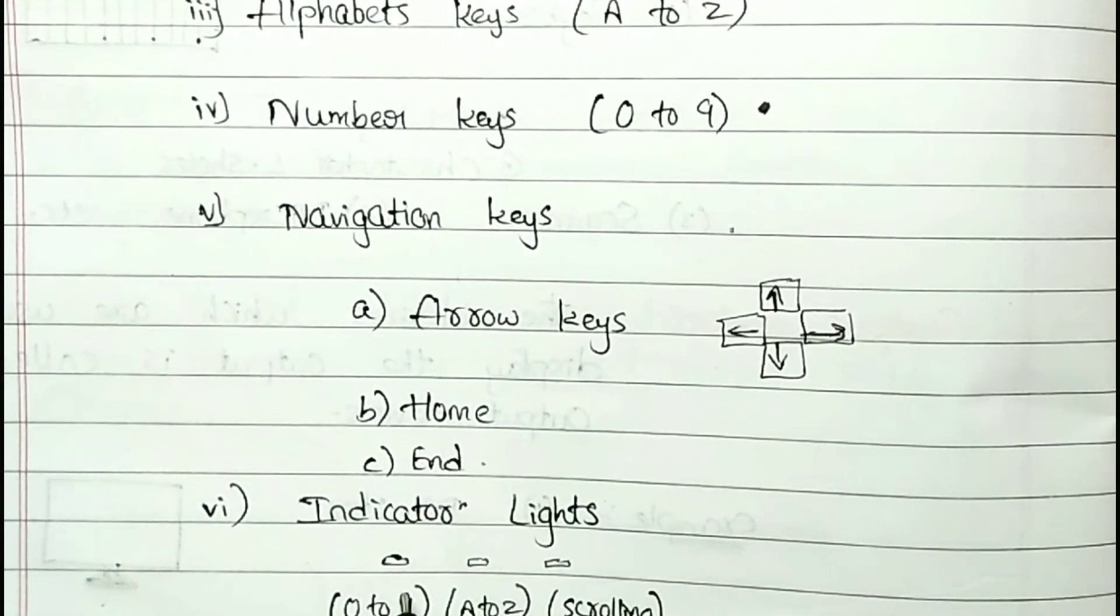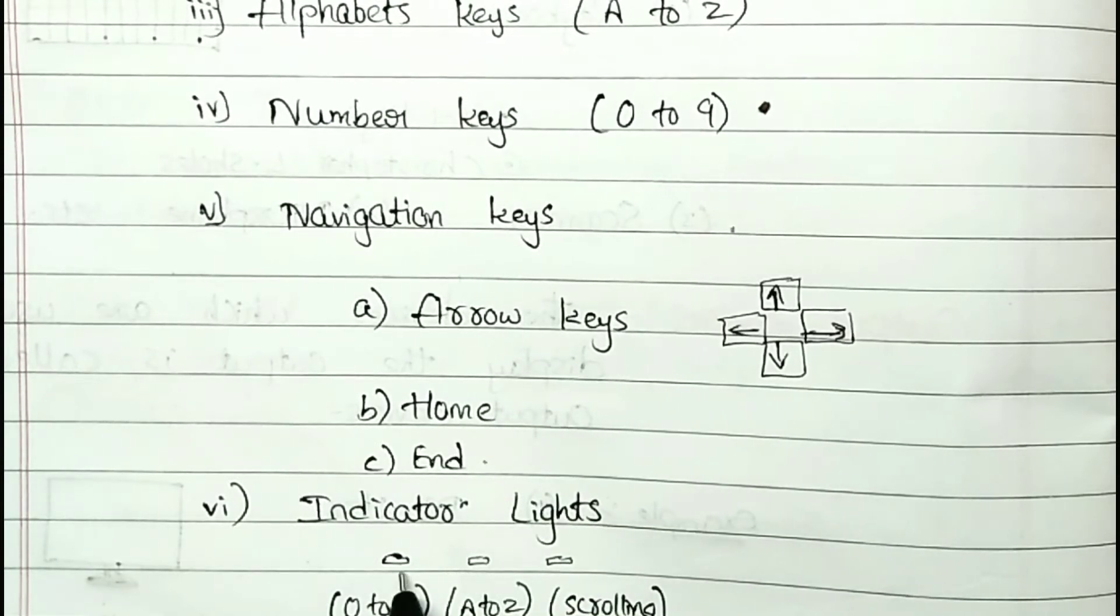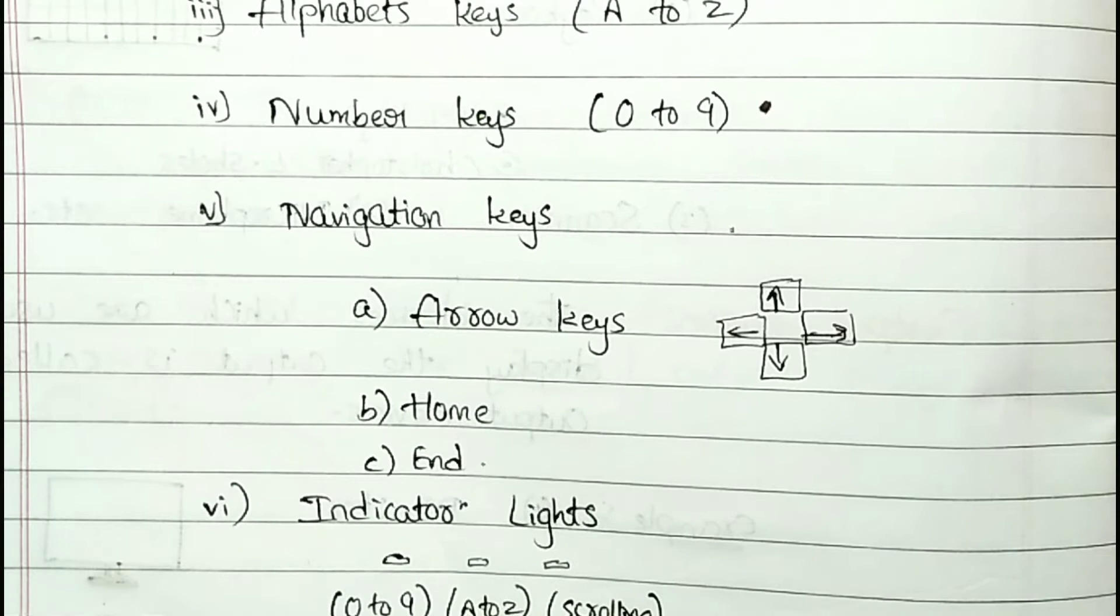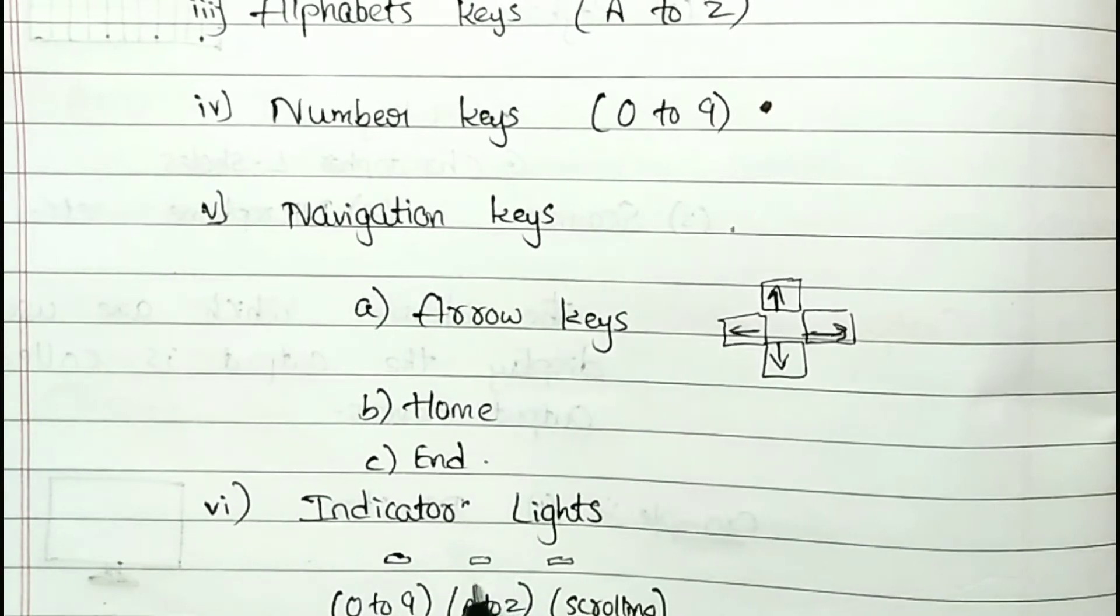Indicator lights. Computer keyboard, there are three lights: 1, 2, 3. This keyboard, this light is 0 to 9 number. It is number lock.